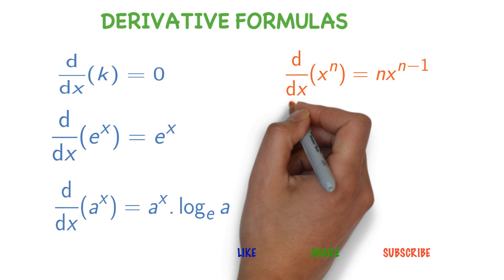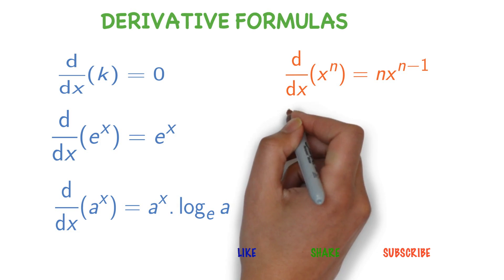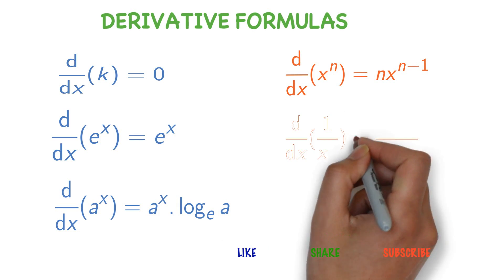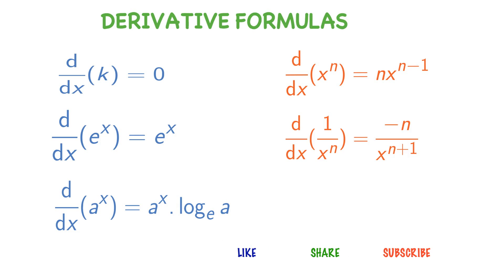You can easily remember this formula with a little bit of practice. Derivative of x power n is n into x power n minus 1. Derivative of 1 divided by x power n is minus n divided by x power n plus 1.